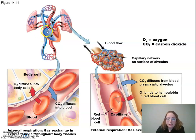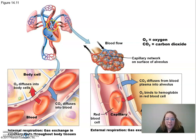Blood flow starts into the right atrium as deoxygenated blood, through the tricuspid valve, into the right ventricle, through the pulmonary semilunar valve, into the pulmonary trunk which branches into the pulmonary arteries going away from the heart. Then at the pulmonary capillaries, gas exchange occurs — blood drops off carbon dioxide and picks up oxygen, becoming oxygenated, and returns through the pulmonary veins.